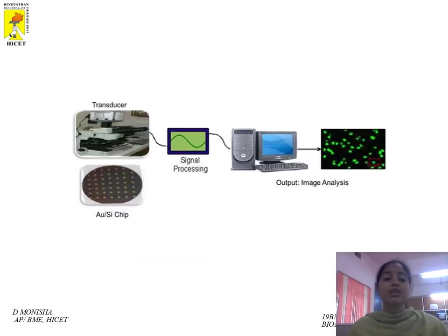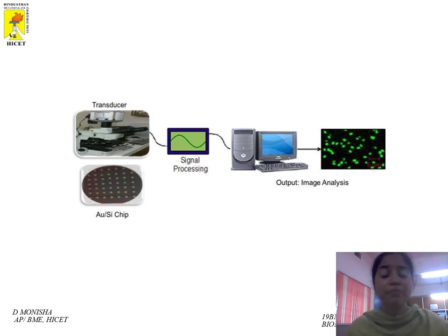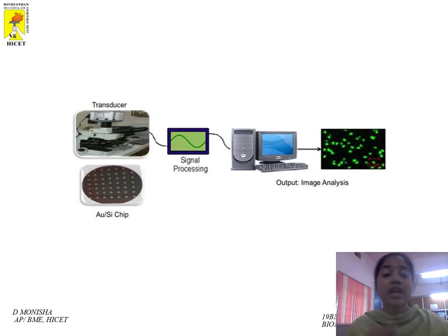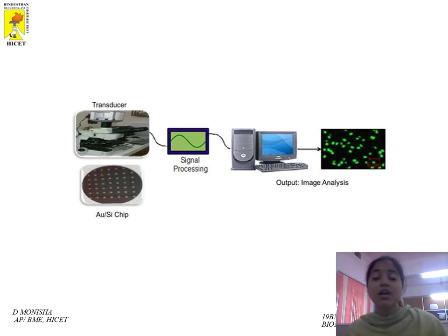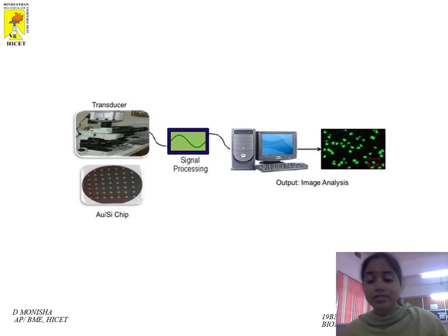In the block diagram, after the microarray sites are displayed in the chip, the data is transferred to the transducer with the help of a low magnetic field. The signal is then processed, and the output is displayed on the LCD for further processing.